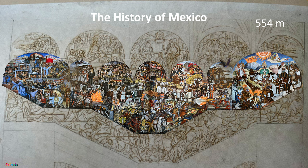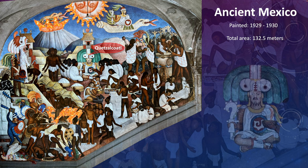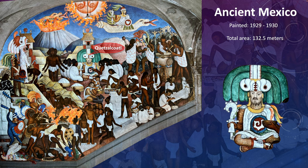Quetzalcoatl is in center stage and is a symbol of wisdom in ancient Mexico for millennia — most notably in Teotihuacan as a feathered serpent. To the Mexica, better known as the Aztecs, he's called Quetzalcoatl. He's a Mesoamerican deity, and also the name of a ruler for nations like the Toltecs.